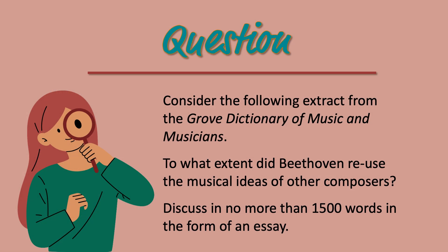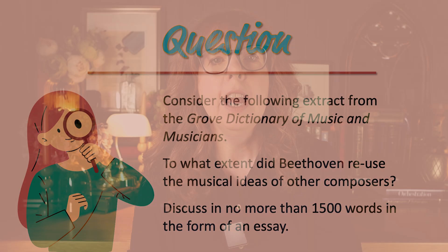The second scenario is where the question makes reference to a source: 'Consider the following extract from the Grove Dictionary of Music and Musicians. To what extent did Beethoven reuse the musical ideas of other composers? Discuss in no more than 1500 words in the form of an essay.' A common scenario here is that the first sentence is omitted, and as already mentioned, in this scenario it's vital that the given extract forms a substantial part of the argument of the essay. Even though the first and third sentences appear to be instructional rather than forming the academic content, it is vital to reproduce both and to address these instructional elements of the question in the essay answer. Commonly addressing only the second sentence is an easier assessment task, but it doesn't address the nuance of the question set.